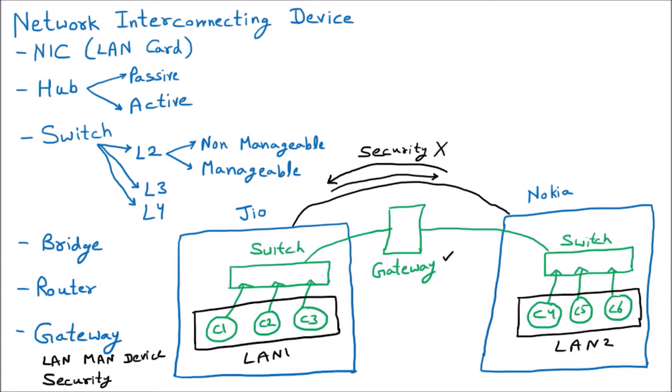Gateway is very intelligent about which data we want to send, and with its help we can send only that particular data. Gateway is similar to a bridge in terms of connecting different LANs, but it also provides security.